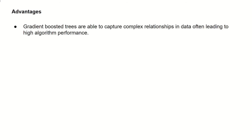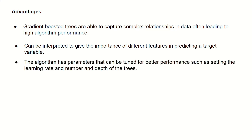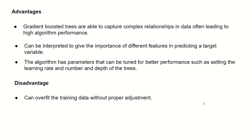So what are the advantages and disadvantages of gradient-boosted trees? Gradient-boosted trees are able to capture complex relationships in data, often leading to high algorithm performance. They can be interpreted to give the importance of different features in predicting a target variable. The algorithm has parameters that can be tuned for better performance, such as setting the learning rate and number and depth of the trees. There are actually many more hyperparameters as well, which makes the algorithm very flexible on complex data. A disadvantage, however, is that it can overfit the training data without proper adjustment, so hyperparameters need to be properly optimized for the algorithm to work well.